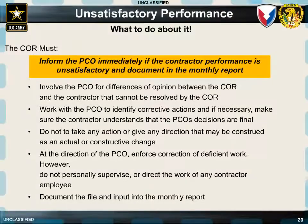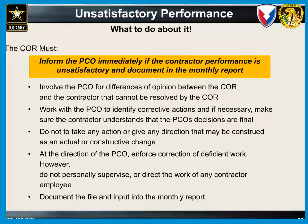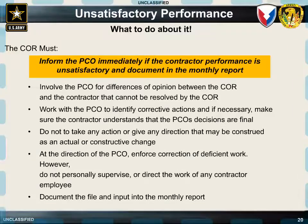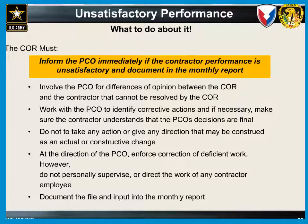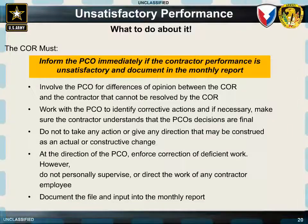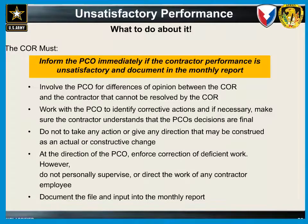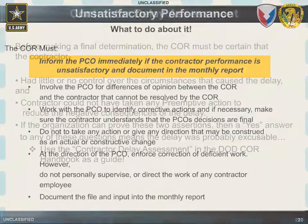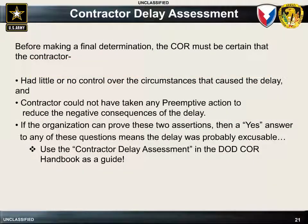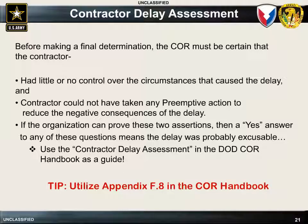When the COR is conducting oversight of the contractor's performance and notices deficiencies or unsatisfactory performance, the COR should document all details of the deficiency and notify the PCO immediately. The COR should also contact the contractor's quality assurance personnel and describe the contractual requirements and the deficiency noted. It is also important that all details of the unsatisfactory performance are included in the COR's monthly status report. When contractors fail to meet the delivery or performance schedules in the contract, the PCO can take actions against that contractor. The COR can use the contractor delay assessment in Appendix F8 of the DOD COR Handbook as a guide in making this determination.